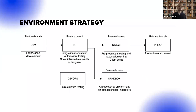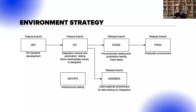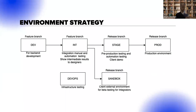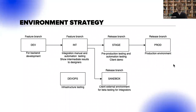When you collect all the information regarding the branching strategy and know the environment structure — what environments you have and their purpose — you can put everything together and design the whole environment strategy: how artifacts will be promoted from one environment to another, and what approvals exist between those environments.